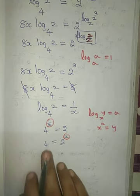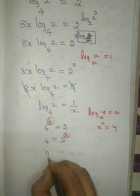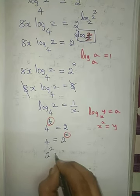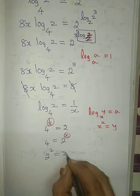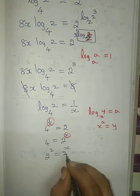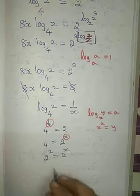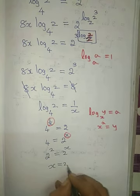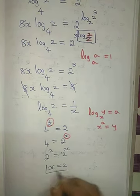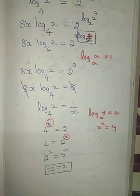Now this 4 I can write as 2 square. So 2 squared equals 2 to the power x. Comparing the powers, I get x equals 2. So x is equal to 2.